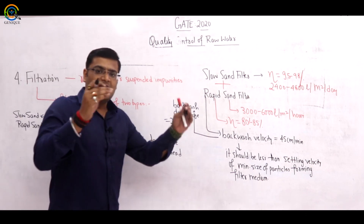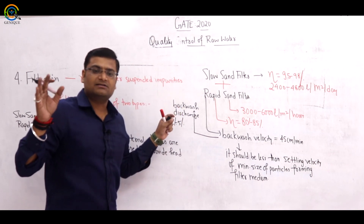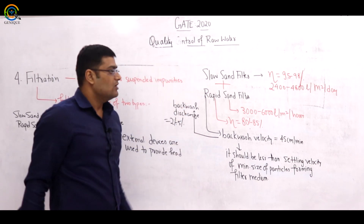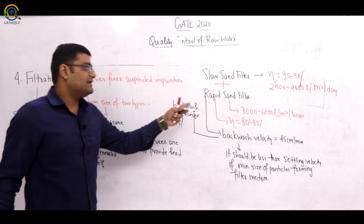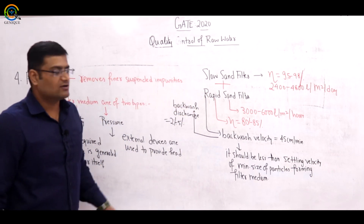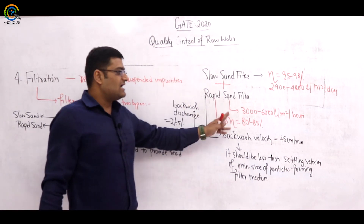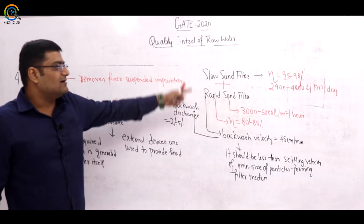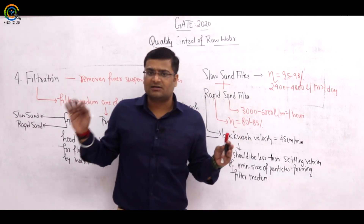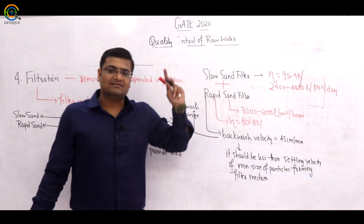Comparing cleaning methods: in slow sand filter, 10–15 mm of sand is removed, particles cleared, and the layer restored — a time-consuming and tedious process. But in rapid sand filter, the cleaning period is only 30 minutes. Rate is high, but efficiency is less compared to slow sand filter. For a small amount of water, always go for slow sand filter.